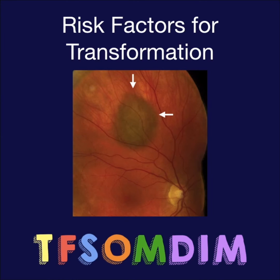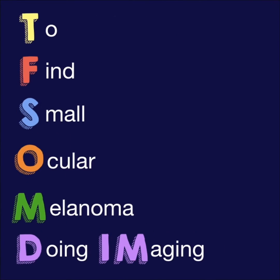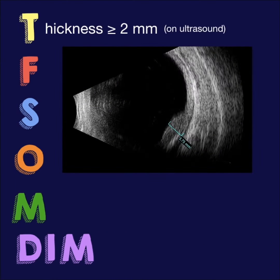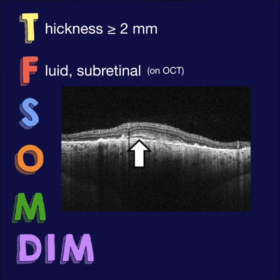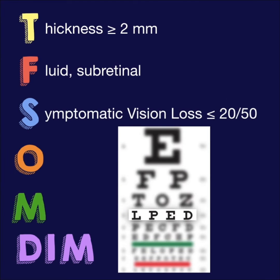TFSOMDIM defines small ocular melanoma doing imaging. T is for thickness greater than two millimeters, F is for subretinal fluid, and S is for symptomatic vision loss, 20/50 or worse.